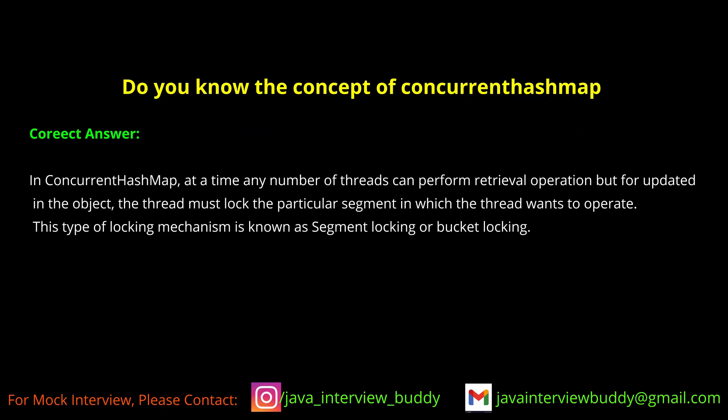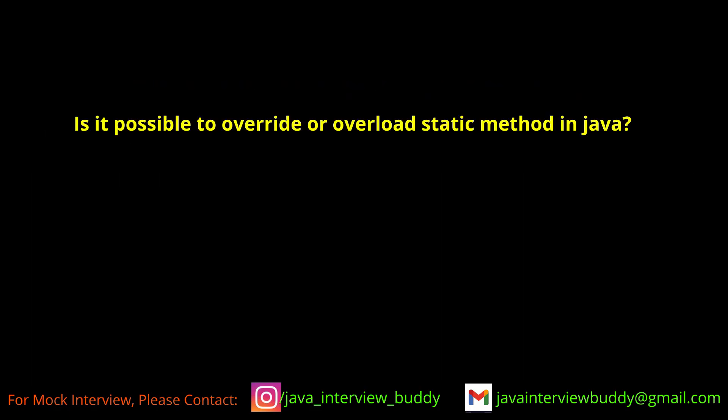Do you know the concept of ConcurrentHashMap? In ConcurrentHashMap you can lock a portion of the map. ConcurrentHashMap does not allow null keys or null values, but you can lock a portion of the map. Suppose 16 threads are running simultaneously and you want to access only five — you can lock that portion.